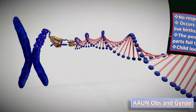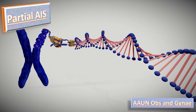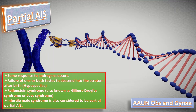In partial AIS, some response to androgens occurs and people have varying numbers of male traits. There is failure of one or both testes to descend into the scrotum. Hypospadias, a condition in which the opening of the urethra is on the undersurface of the penis, also develops. The Reifenstein syndrome (also called Gilbert-Dreyfus syndrome or Lubs syndrome) is a part of partial AIS, and the infertile male syndrome is also considered part of partial AIS.